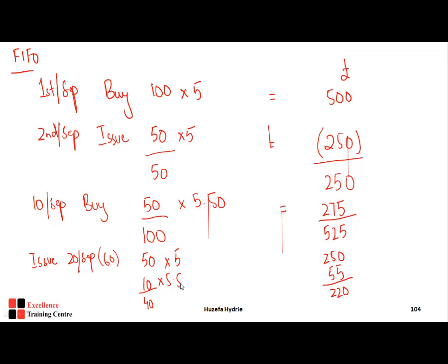On 27th September, we buy 100 units at £5.60 = £560. Adding to the £220 remaining, the closing inventory value is £780. When the examiner gives a FIFO or LIFO question, they will ask either the cost of issues or the closing inventory. The first issue was £250, the second issue was £305 (£250 + £55), and the closing inventory is £780.